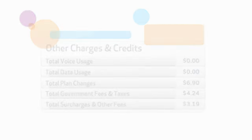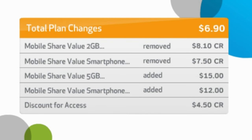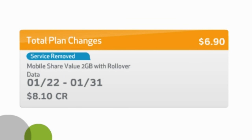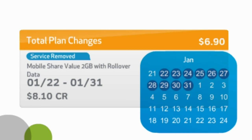Let's take a look at your plan changes. This section details the charges you incurred for your AT&T wireless line due to activating or changing your service. These charges are for partial use of monthly services, ensuring you only pay for what you've actually used. This month, for instance, you removed an item from your wireless line. Your account was credited for the time the service was not in use, so on your bill, you'll see this amount has already been deducted.